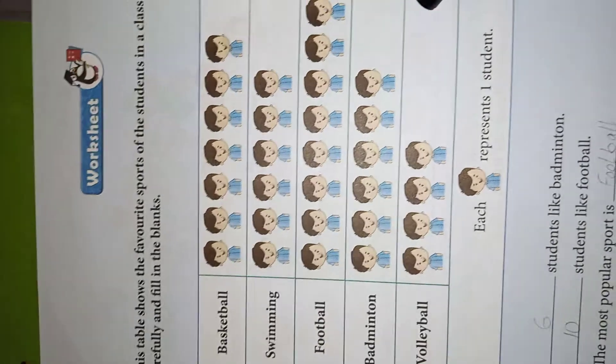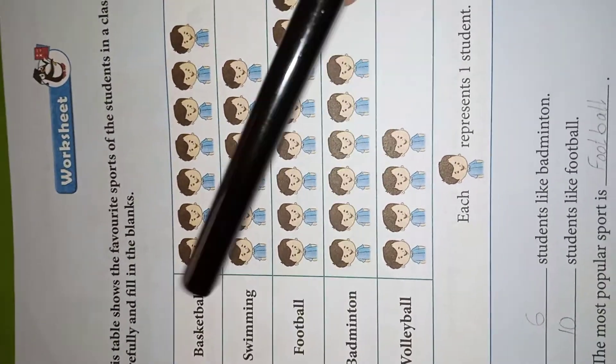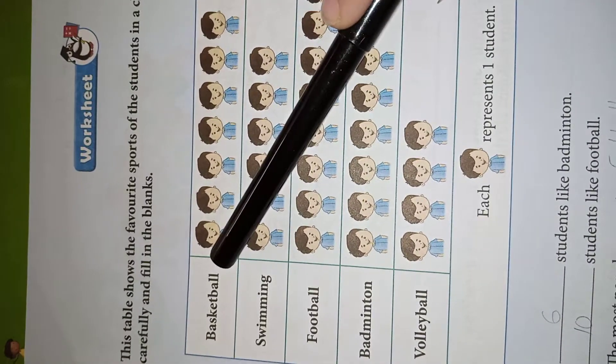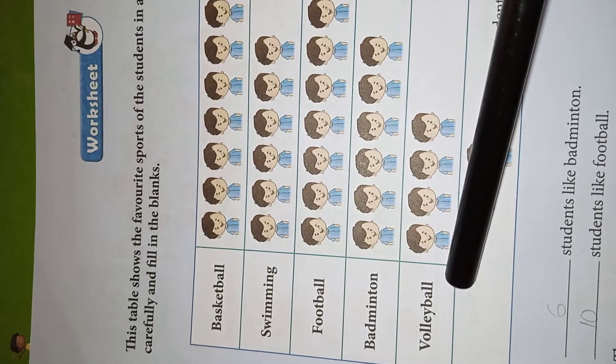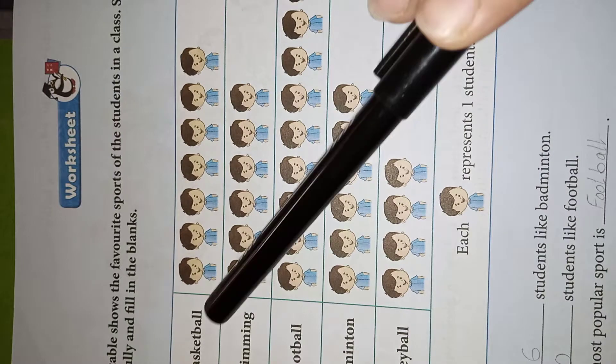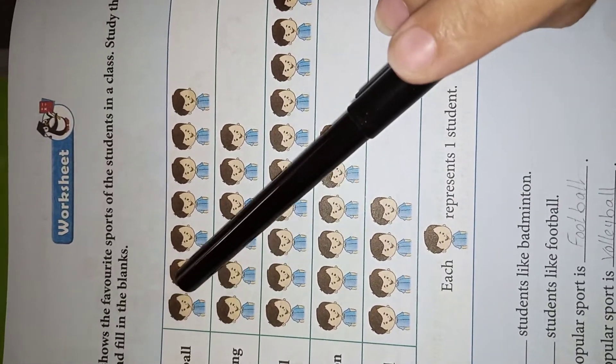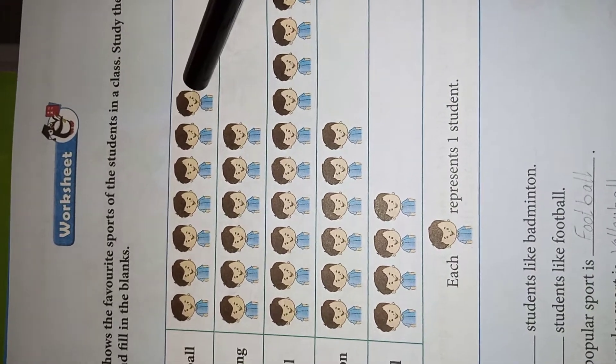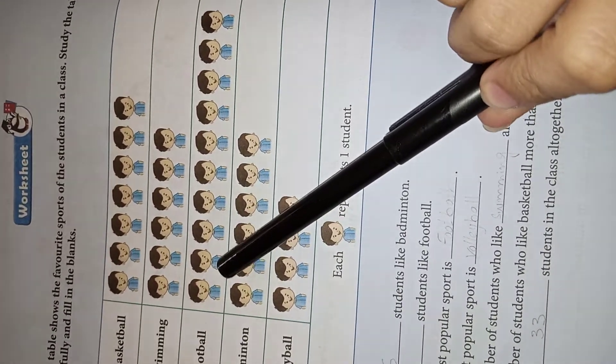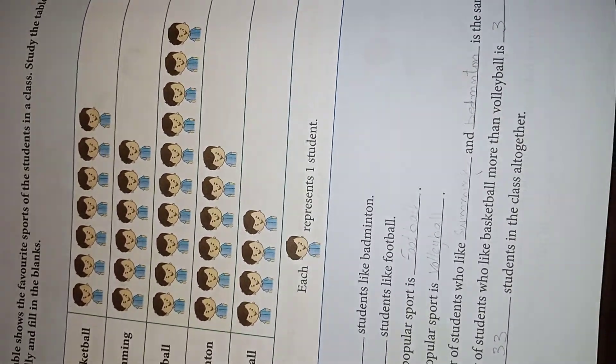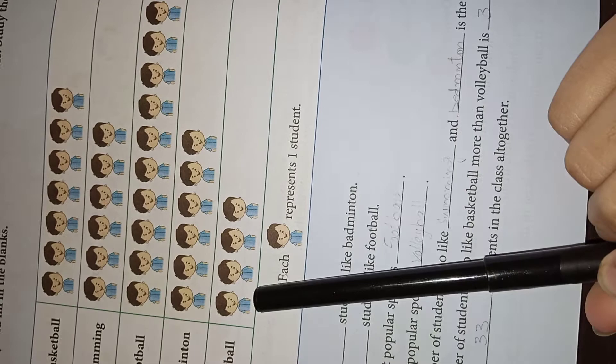Now here is a different activity which I will solve for you. Some sports are given: basketball, swimming, football, badminton, and volleyball. The number of students who like each sport is shown — each picture represents one student. Basketball is liked by seven students, swimming by six students, and similarly for the others.